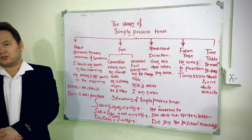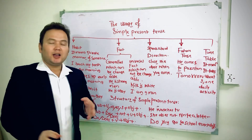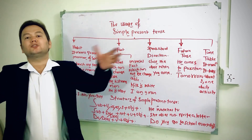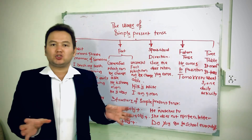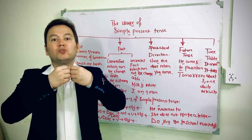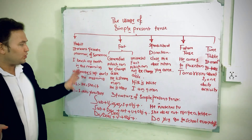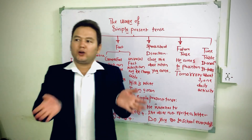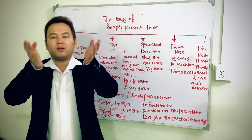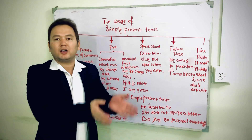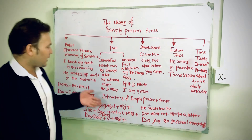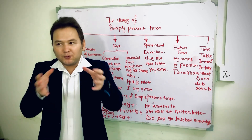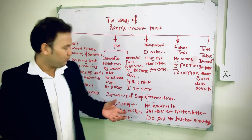Second, simple present tense always speaks about fact. We have two types: general fact and universal fact. A general fact is changeable as time passes — it has a direct effect on the mental or physical condition of someone. For example, 'He is a strong man' — right now he is strong, but in the future he may not be strong.